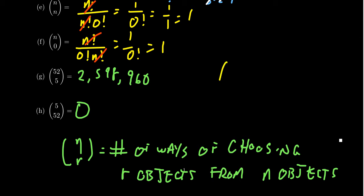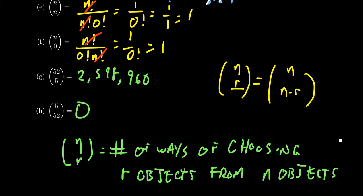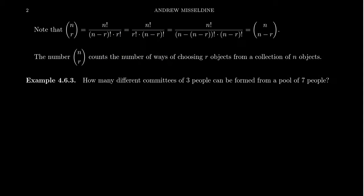Why are n choose r and n choose n minus r the same? Because if you have n objects and choose r of them, there are n minus r that you didn't choose. Think of a dodgeball game: choosing which r kids are on your team is essentially the same as choosing which n minus r kids are not on your team. By not being chosen, you're actually chosen — just for something different.